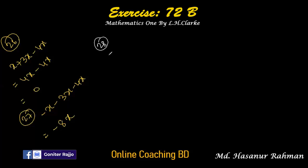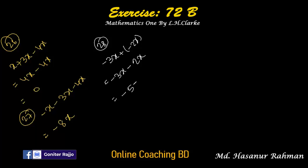Number 28 says minus 3x plus minus 2x. Plus into minus is minus, so minus 3x minus 2x. The signs of 3x and 2x are both same, so we add: 3 plus 2 is 5, and the answer is minus 5x.